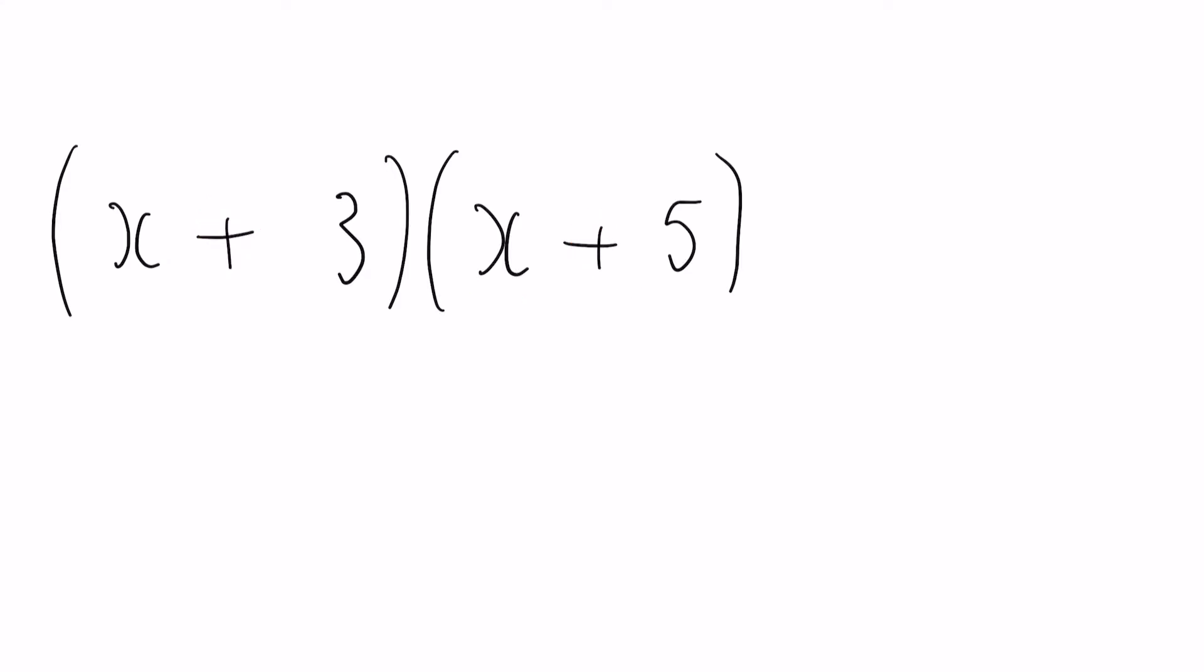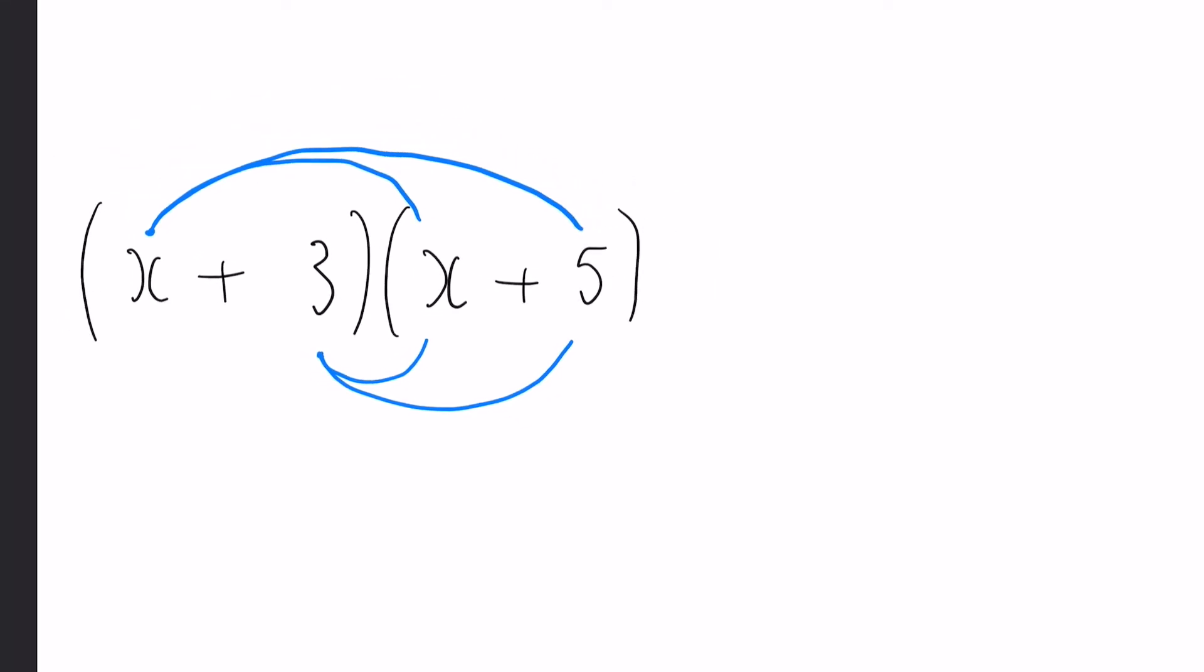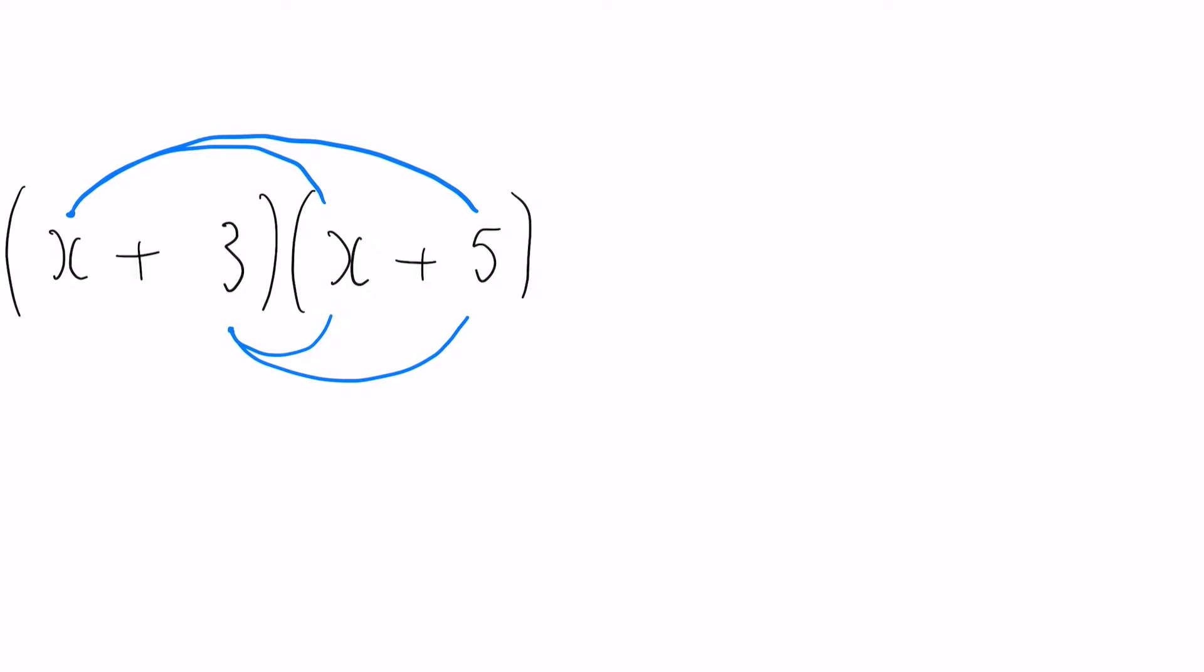As I said in my expanding single brackets video, we talked about the claw method. The claw method involves taking one number and almost joining it to the other two. However, this time we have to do that twice in a double claw. We've done the X to the X and the X to the five. Now we must do the three to the X and the three to the five. From there we must simply multiply those claws and eventually add them or subtract them together. In this case it will only be addition because we only have positive numbers.